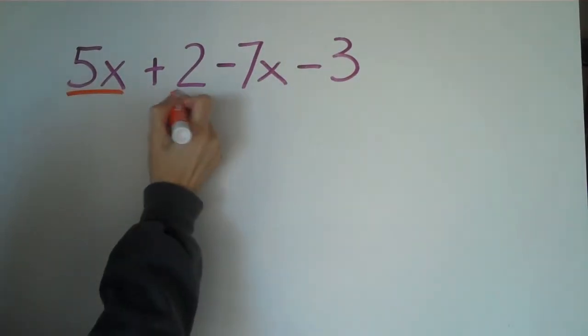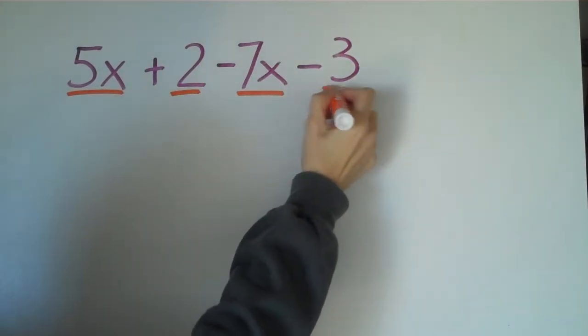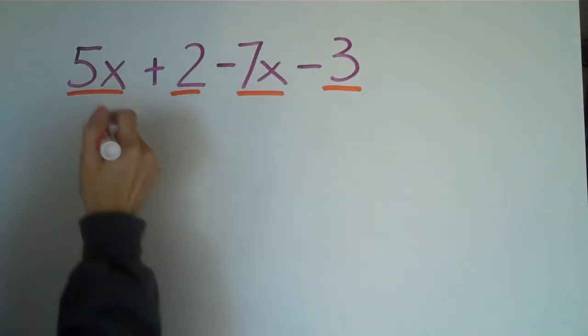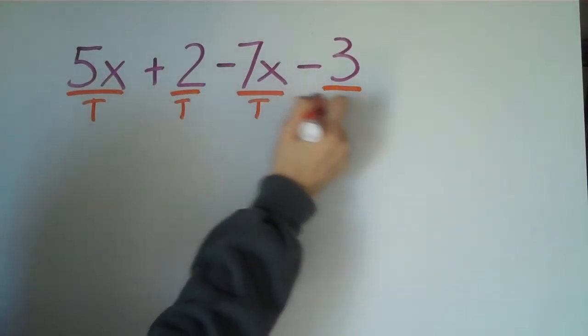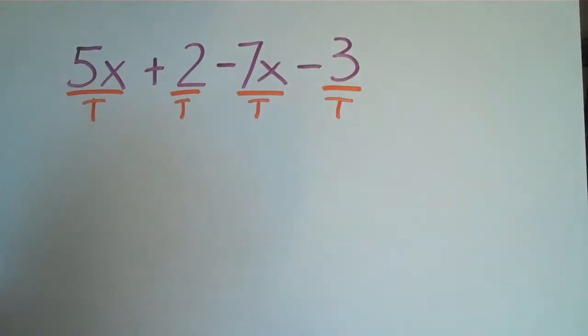Well, the terms would be anything in between the operations. 5x is a term, 2 is a term, 7x is a term, and 3 is a term. Anything in between the operations. Okay? So these are all terms. I'm just going to write a t under each one.